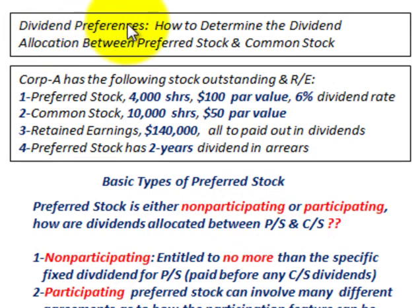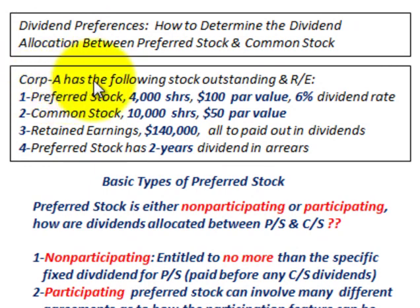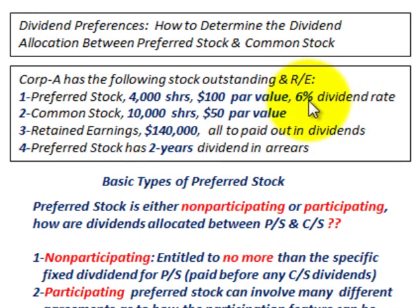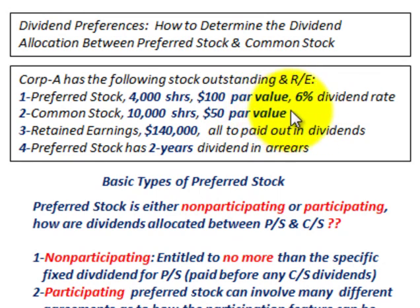Here we're going to be looking at dividend preferences and how to determine the dividend allocation between preferred stock and common stock when we don't have any specific agreement. Corporation A has the following stock outstanding: preferred stock with 4,000 shares outstanding, $100 par value, and a 6% dividend rate. Common stock has 10,000 shares outstanding at a $50 par value, with no defined dividend.